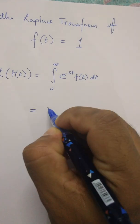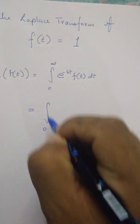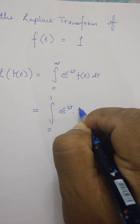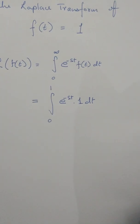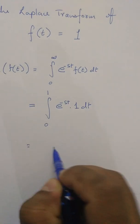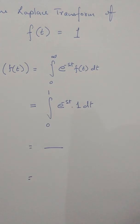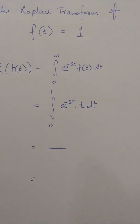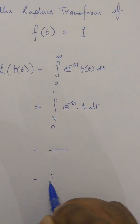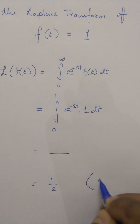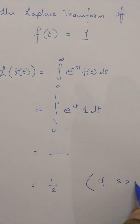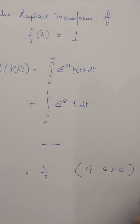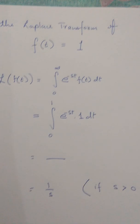Here f(t) is given to be 1. After a few steps, using our class 12 calculus, we can conclude that this is equal to 1 over s, if s is greater than 0. Pretty easy! Then switching back to the front camera.